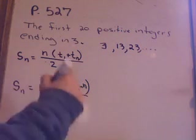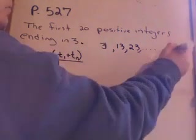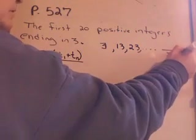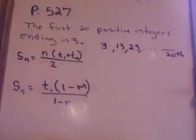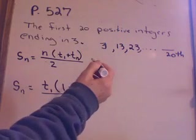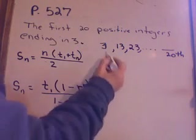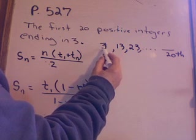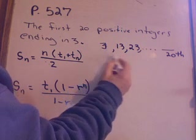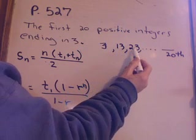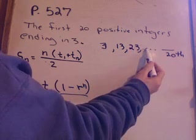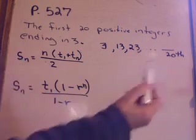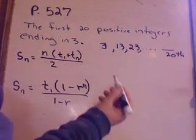And so on, until I hit the 20th one, and I need to figure out what is the 20th one to find the sum. Now, first of all, what type of series is this? So let's look at how do I get from here to here. I add 10. How do I get from here to here? I add 10. What would be the next one? 33. I add 10.